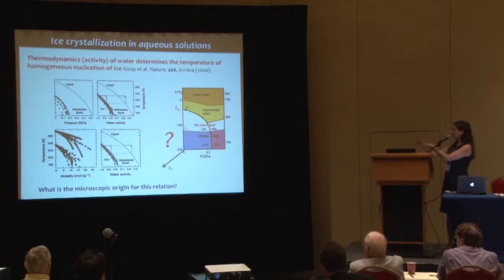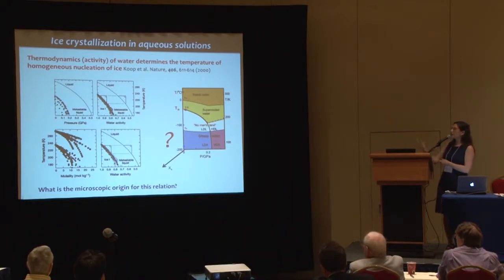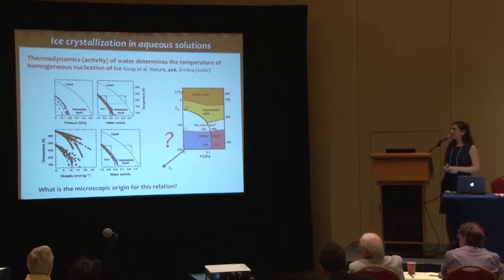Koop et al. show that if you look at all freezing temperatures as a function of pressure, they look completely dispersed; as a function of molarity, also dispersed. But if instead of pressure or molarity you convert to water activity — the ratio of vapor pressure to that of pure water, a measure of chemical potential — all lines come together into essentially a single freezing line, the same as a function of pressure and concentration. Water activity is determinant for freezing temperatures. The question is: what is the microscopic origin of this relationship?